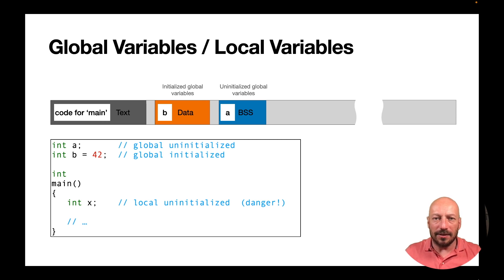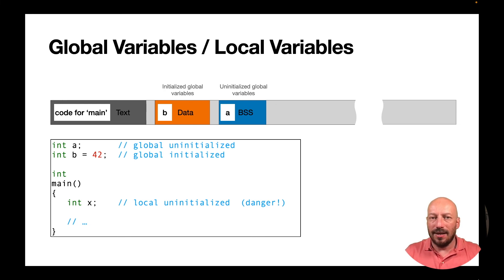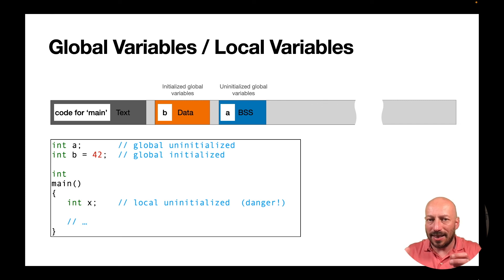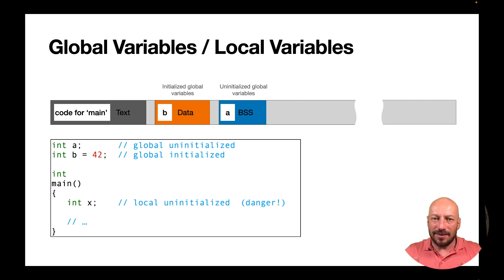Remember: programming in C means programming close to the hardware — not as close as directly programming in assembly, but compared to other higher-level languages you have to know more technical details. You have to know about memory — that it's organized in bytes, in memory cells, and that each memory cell has an address. You also have to know how a program gets executed: the executable gets loaded into memory with its segments — the text segment, the data segment, and the zero-initialized BSS segment — and then execution begins with the first instruction.